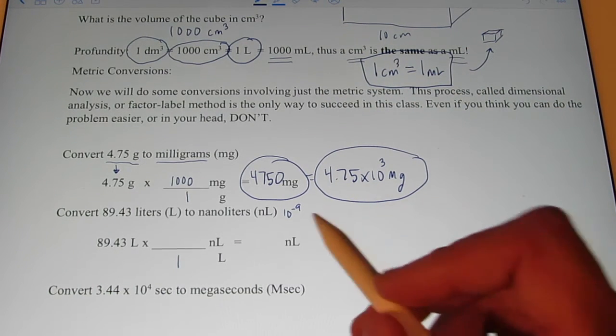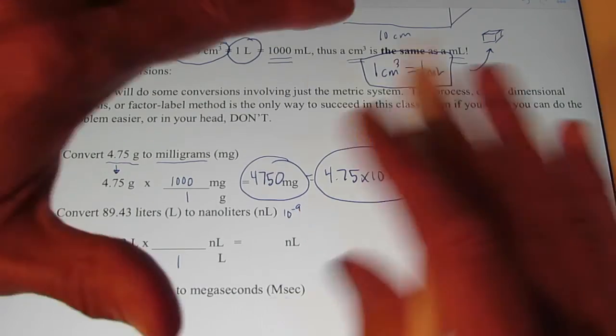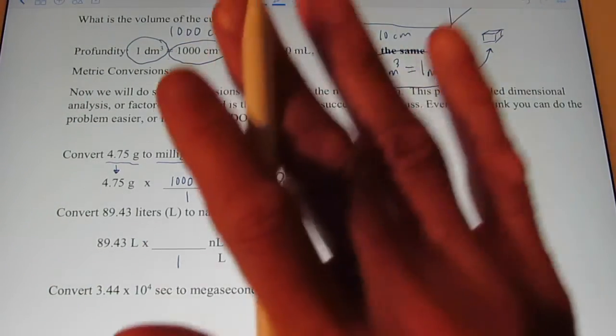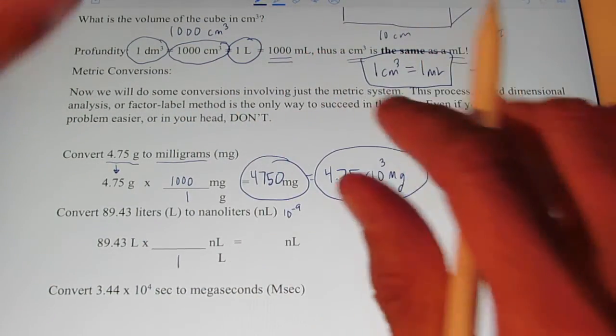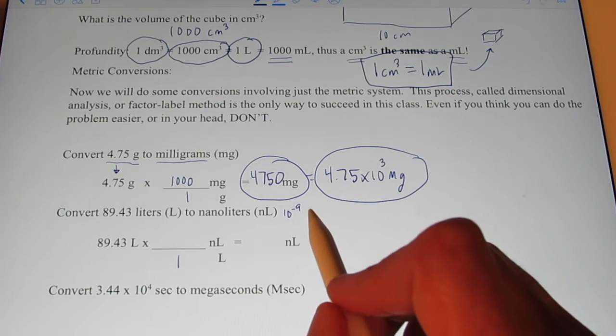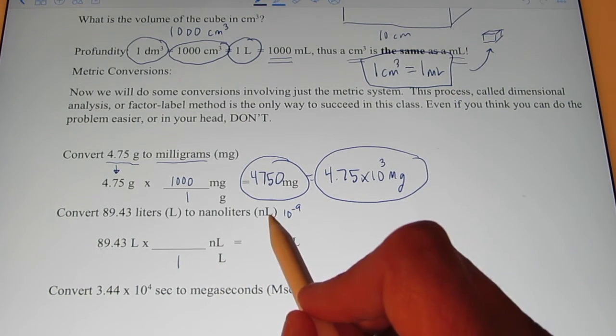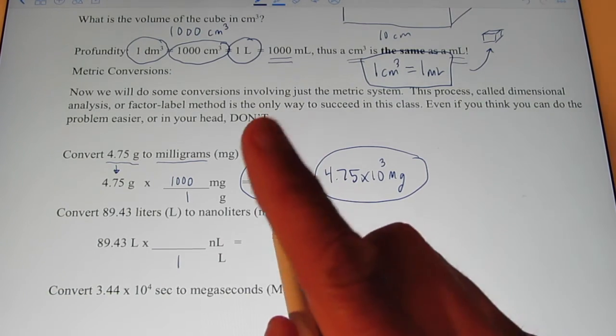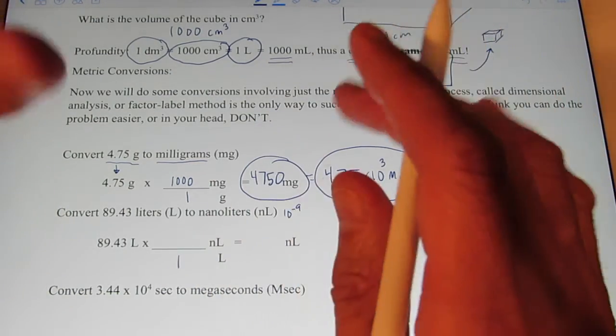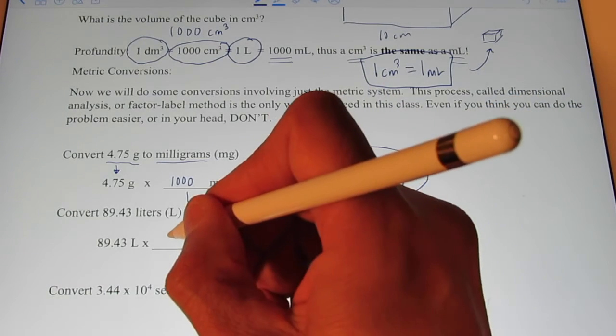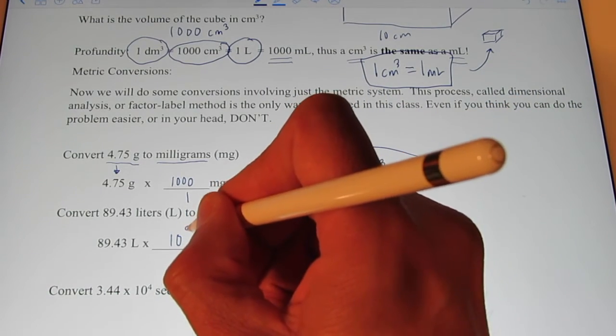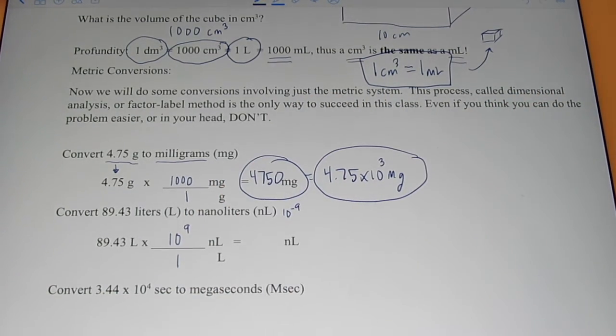Some students will say ten to the negative ninth. No, that's not true. That's what nano-liter means, ten to the negative ninth liters. It means a billionth. So, if I had one liter, how many nano-liters would be in it? Correct. If you said a billion, you are correct. So, another way to write a billion is ten to the ninth.